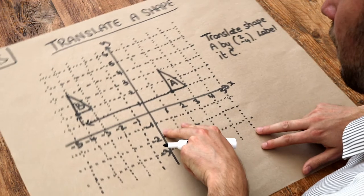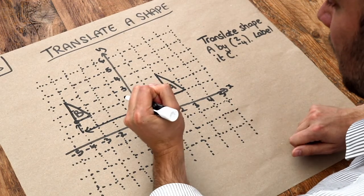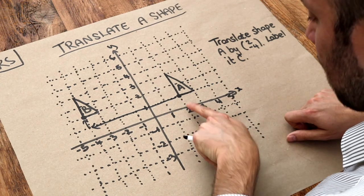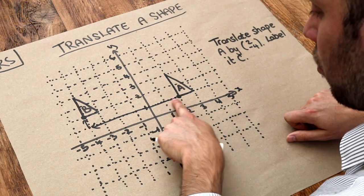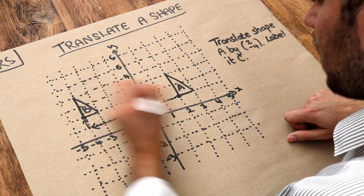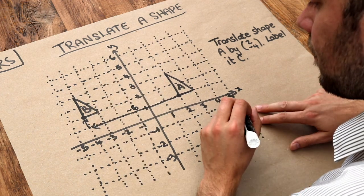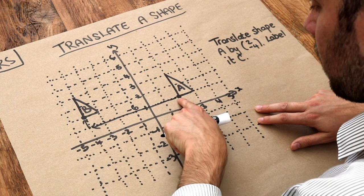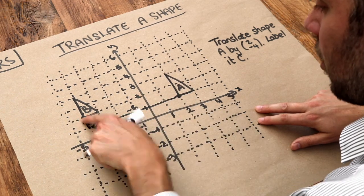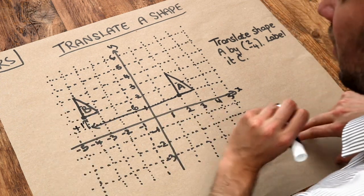The way we give that as a vector is we say what's happening to the x value and what's happening to the y value. The x values are decreasing from 2 to minus 4, so the x value is decreasing by 6, and the y value from here to here is going up from 1 to 2, so the y value is increasing by 1.